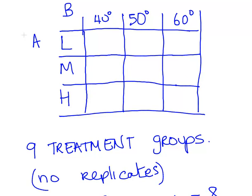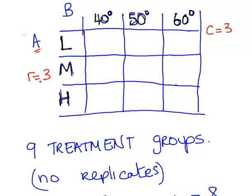Here we have a little table with factor A having settings low, medium, and high, and factor B representing temperature settings: 40, 50, and 60 degrees. In both cases the number of factor levels is 3, so R equals 3 and C equals 3. There are 9 treatment groups — the various combinations of the levels of A and B.